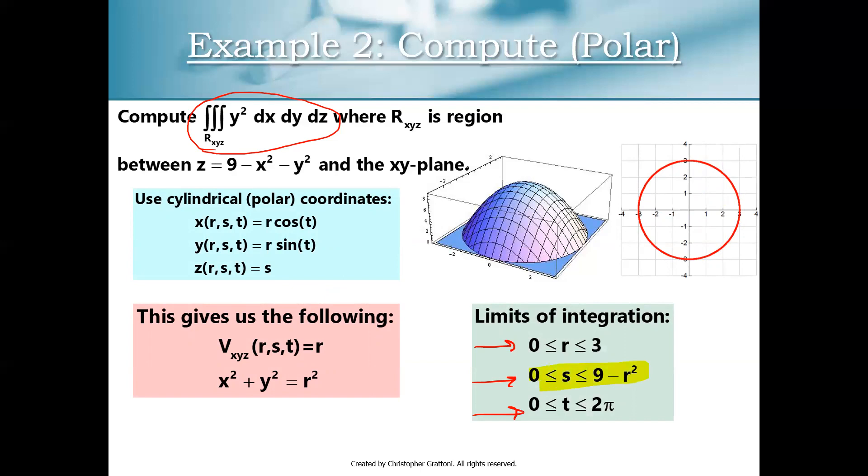I think the easiest one to wrap your mind around is the middle one here of s goes from 0 to 9 minus r squared. And the reason I think this one kind of makes sense, remember in the previous example we had z top and z bottom? Well now, we still have z top and z bottom, but we have s top and s bottom. So this paraboloid in rectangular coordinates, it was z equals 9 minus x squared minus y squared. But now if we move over to cylindrical coordinates, we know that z gets replaced with s. And then we have 9 minus x squared minus y squared, but we know from here minus x squared minus y squared should be minus r squared. So our s top now is 9 minus r squared, and our s bottom is just the xy plane, which is just z equals 0, or in this case s is equal to 0.